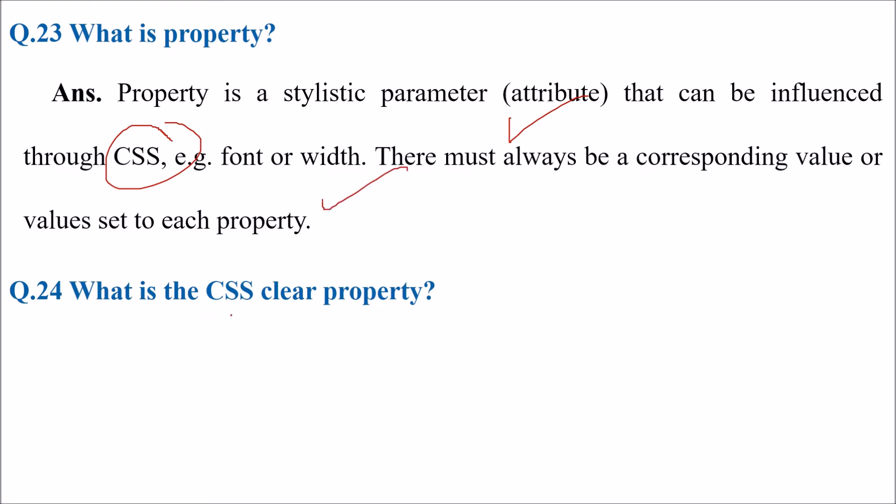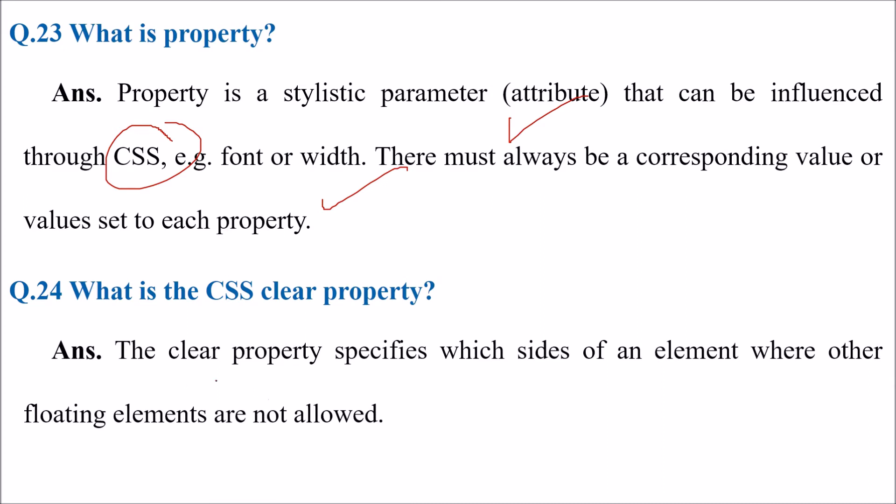What is the CSS clear property? The clear property specifies which side of an element where other floating elements are not allowed. This method cannot control sides for multiple document elements.